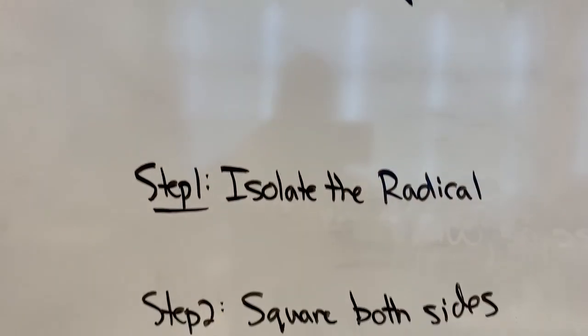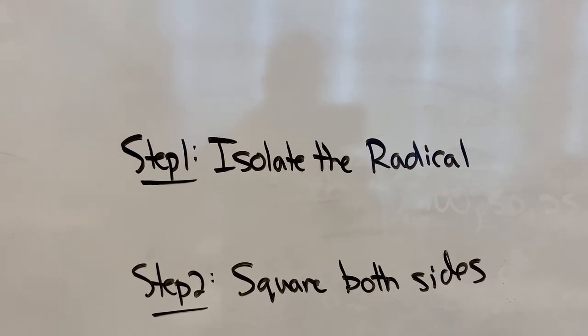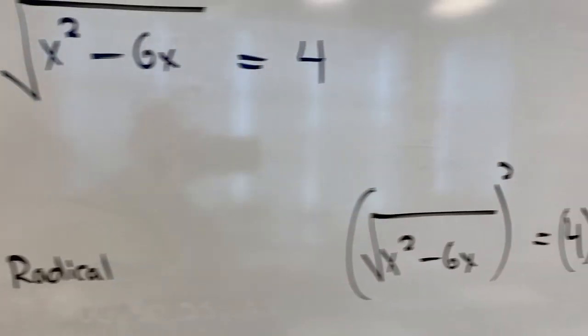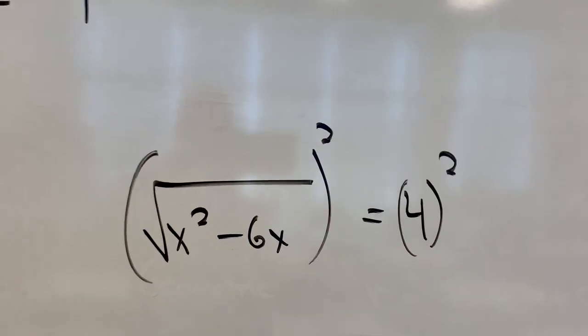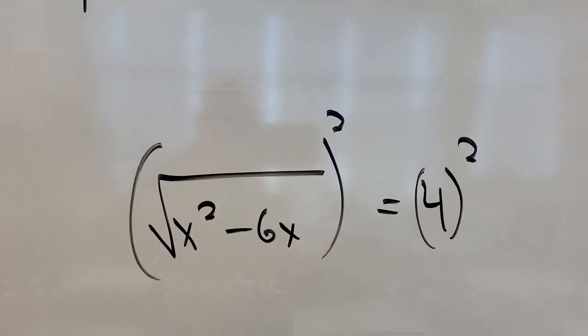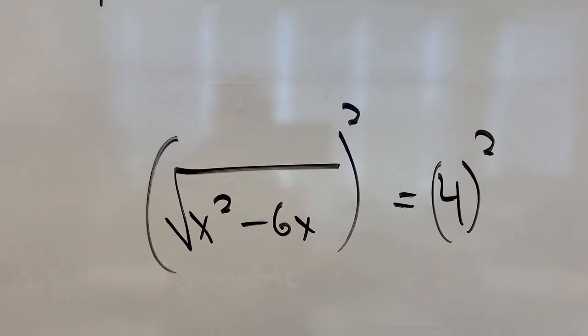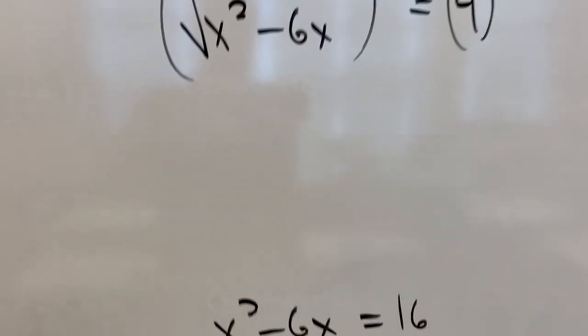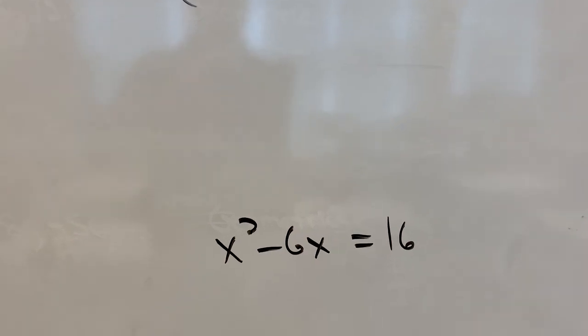Once that's done, we're going to square both sides. The reason why we're doing that is we want to get rid of that radical. So if I square both sides of this equation, I'm squaring the entire left side, the entire right-hand side. And that's going to give me no more square root on the left, and then 4 squared, easy enough, is 16.